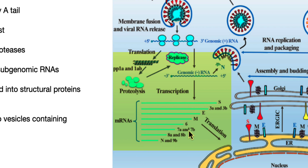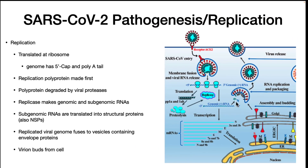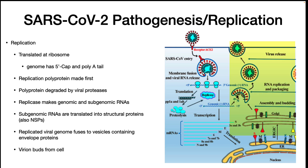These mRNAs are all translated and the proteins go to their respective locations. The replicase goes to where the genomes are being replicated. The spike protein, N, M, and E head to the envelope. The nucleocapsid protein associates with the genome, then binds N, M, and E, facilitating interaction with the vesicle containing the spike protein. This then buds into an endosome and exits the cell by exocytosis — it buds out of the cell.